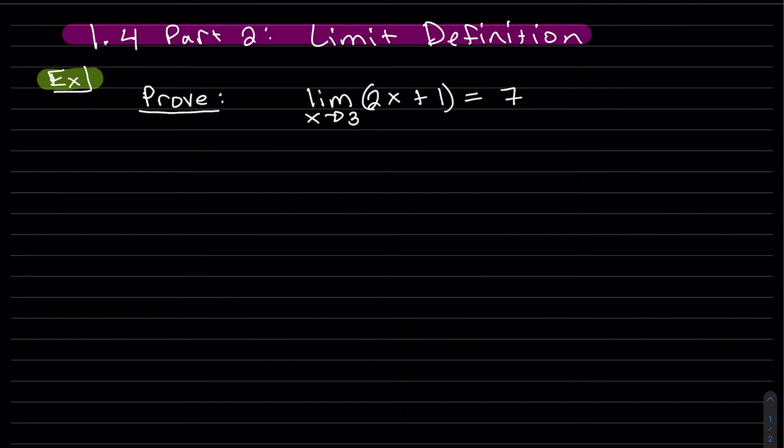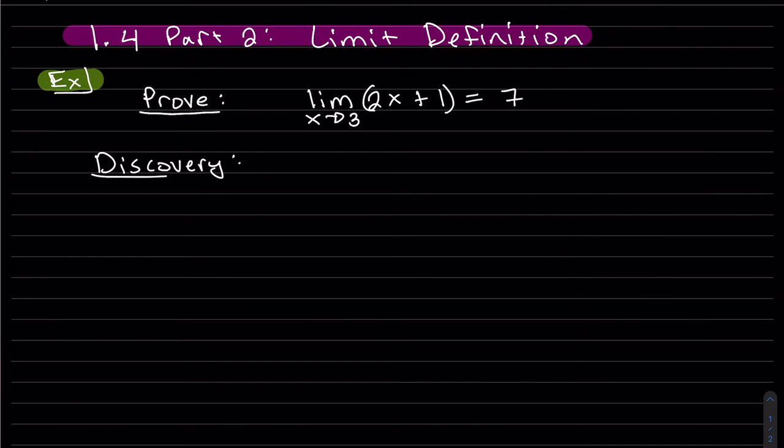Okay, so this is the second part of the limit definition. We're going to start off with a review of proving a linear limit. So prove that this limit is equal to 7. So we start with the discovery, and let's just write out what we have going on.